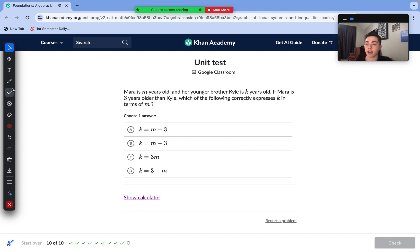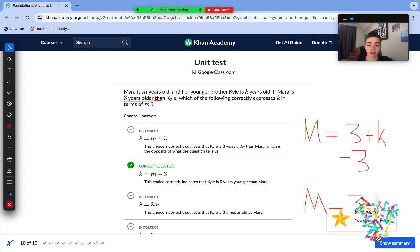Last question here. Mara is M years old and her younger brother Kyle is K years old. If Mara is three years older than Kyle, which expression can be used to find Kyle's age? To find Mara's age, we need to add 3 to Kyle's age, so M equals K plus 3. We can see here that all of our answer choices have isolated the K. So with this expression, we need to isolate the K. How we do that, we subtract 3 from each side. So M minus 3 equals K. We can obviously change the sides. So K also equals M minus 3. B is the correct answer here.